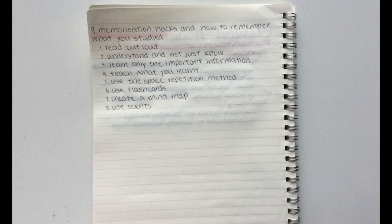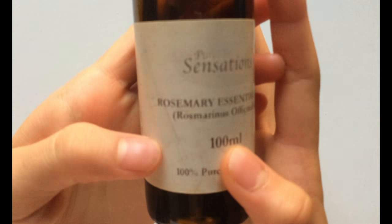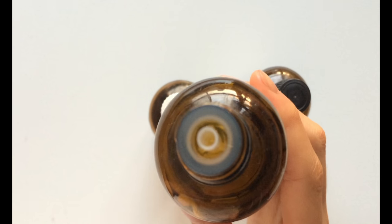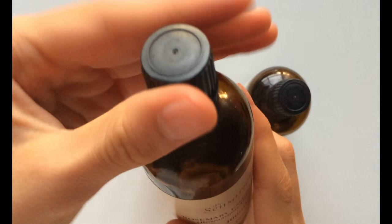The eighth hack is to use scent. Since smell is closely linked with memory, dabbing a bit of lavender or rosemary essential oil or even some perfume when trying to memorize information will help you memorize better.